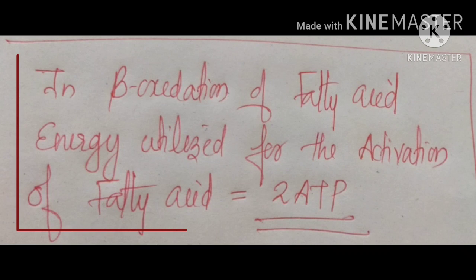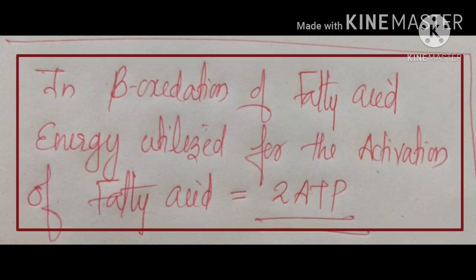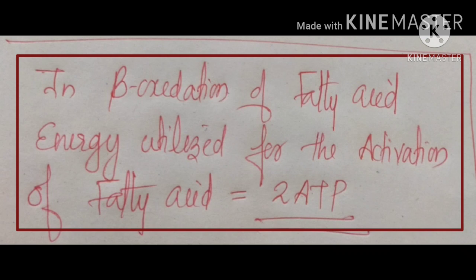Before beta oxidation, the fatty acid must be activated. Activation of fatty acid takes place in the cytoplasm or cytosol — not in the mitochondria. Activation requires 2 ATP molecules, which are consumed. The activated fatty acids are then transported from the cytoplasm to the mitochondrial matrix via the carnitine transport system.